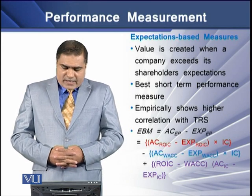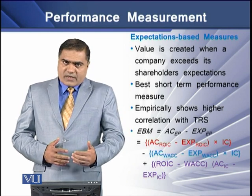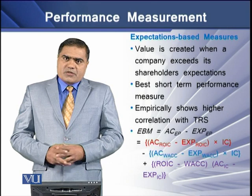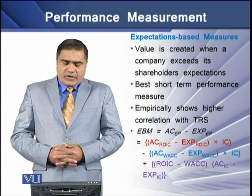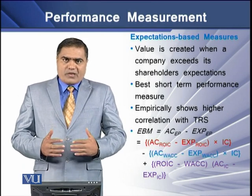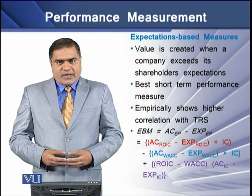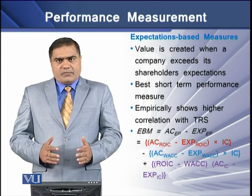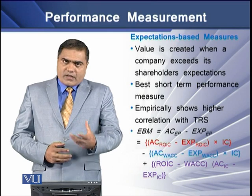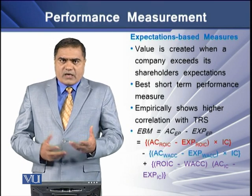Empirical literature shows that there is a higher correlation between expectations based performance measures and total shareholders return. To determine expectations based profit, we need to deduct expected profit from the actual profit. If we expand this equation, we can have three different sub-measures: the first is revenue, the second is cost, and the third is invested capital.